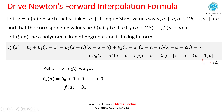Put x = a in equation (A). Since this point lies on the polynomial, it must satisfy the equation. All terms containing (x−a) become zero, so Pn(a) = b0. Writing Pn as function f, we get f(a) = b0.